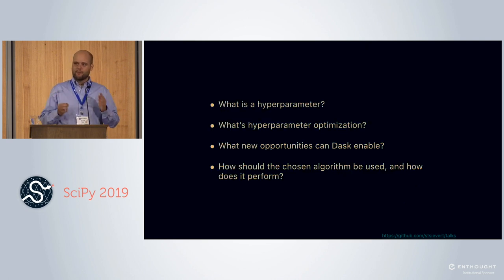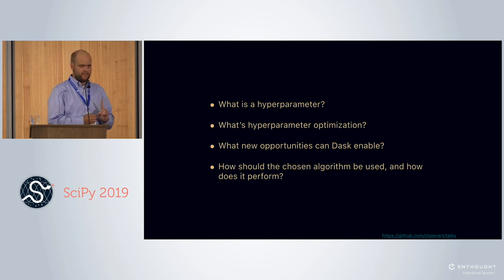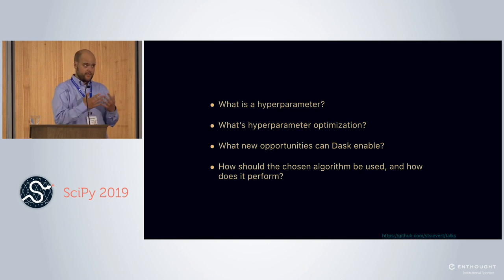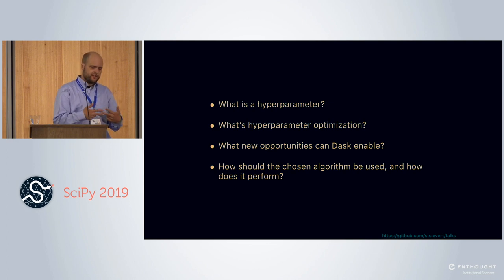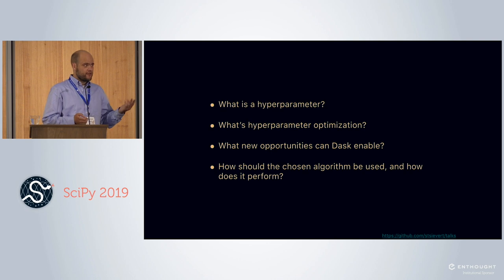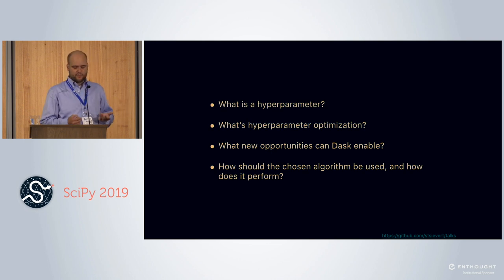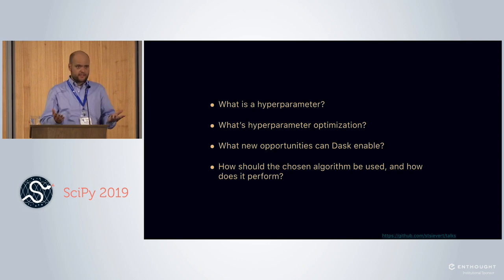Today I want to talk about four things. First I'm going to mention the problem I'm trying to solve and explain why you should care about it. Then explain the complications of that problem. It turns out Dask can bring some exciting opportunities to this problem. And then I'll ask: how well does Dask's hyperparameter optimization perform?